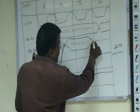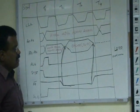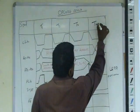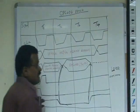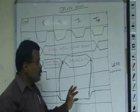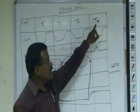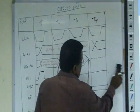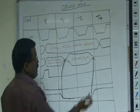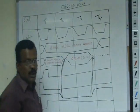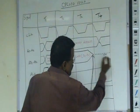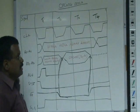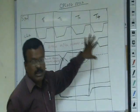Within the third T-state, the instruction is available in the instruction register. Then what is the purpose of T4? During the T4 state only, the instruction will be executed. The first three T-states are used to fetch the instruction from memory. The last T-state, T4, is used to execute that instruction. That is why whenever the instruction is being executed, the address and data buses may have any value — that is why they are drawn with dotted lines. The fourth T-state is exclusively for executing that instruction.